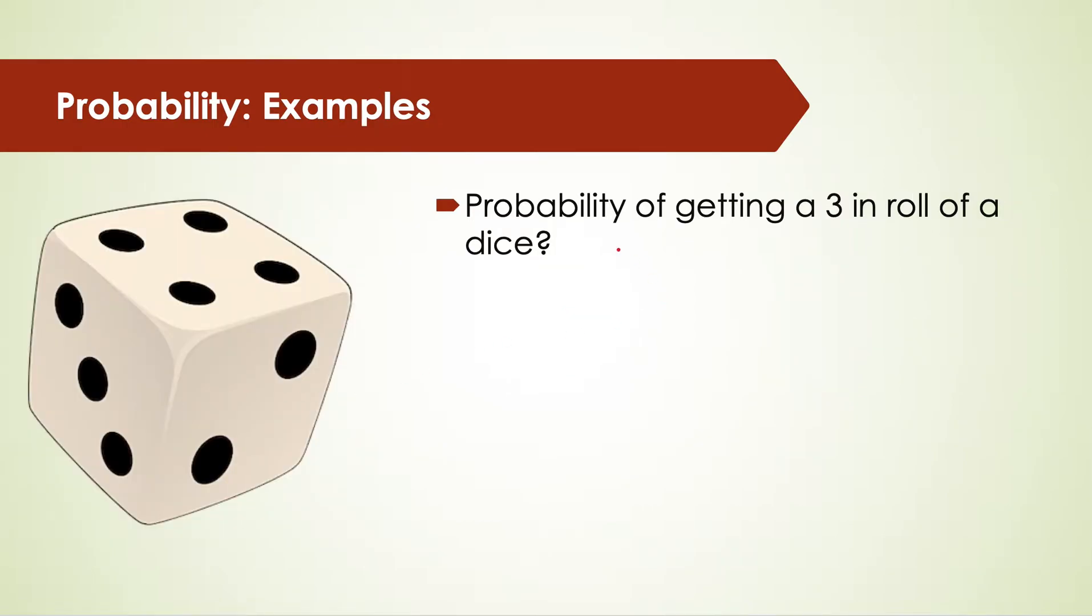Let's take another example. What is the probability of getting a three in roll of a dice? When we roll a dice, we can either get one, two, three, four, five, or six. So total number of outcomes is six.